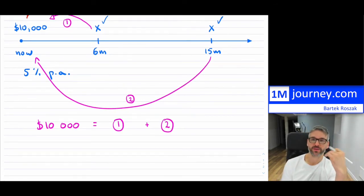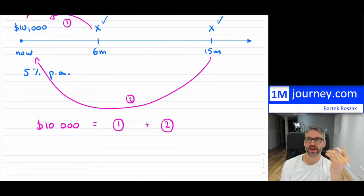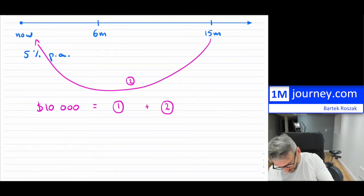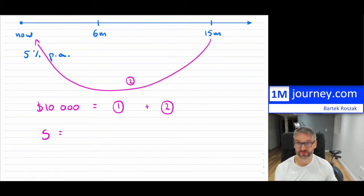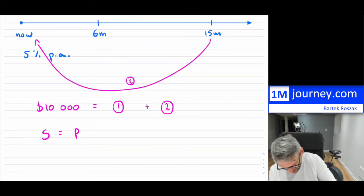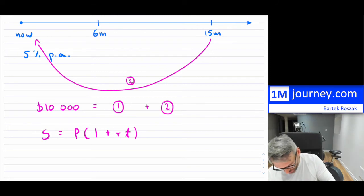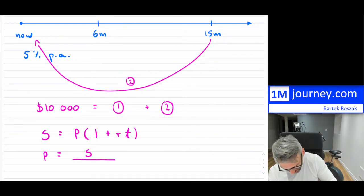If we're going to bring values back towards right now, we're bringing them to present value. For simple interest, the future value formula is S = P(1 + rt), but that moves it forward. Since we're moving payments back, we use P = S / (1 + rt), where our S — the future values — will be our X payments.